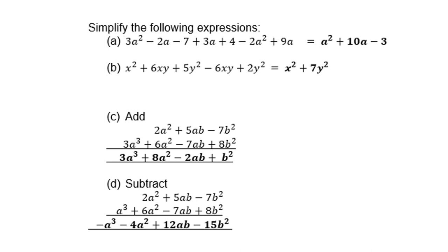(d) We subtract. Remember, a cubed becomes minus a cubed. The sign must change. Don't forget. Then 6a squared becomes negative 6a squared, plus 4a squared is negative 4a squared. Plus 7ab. Because the minus 7ab becomes plus 7ab gives you 12ab. And plus 8b squared becomes minus 8b squared. So minus 7b squared minus 8b squared is minus 15b squared. Again, people, use the calculator if you are not sure.